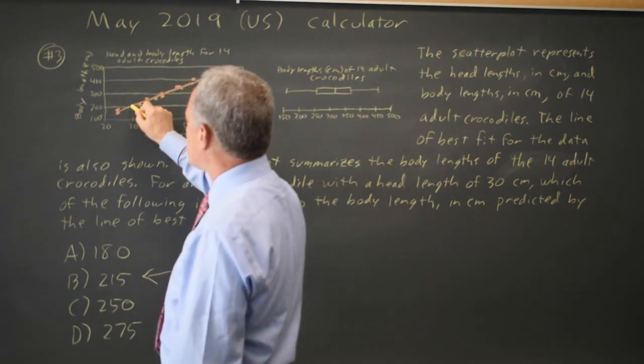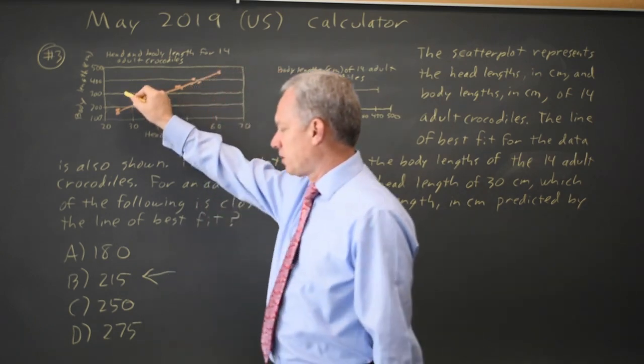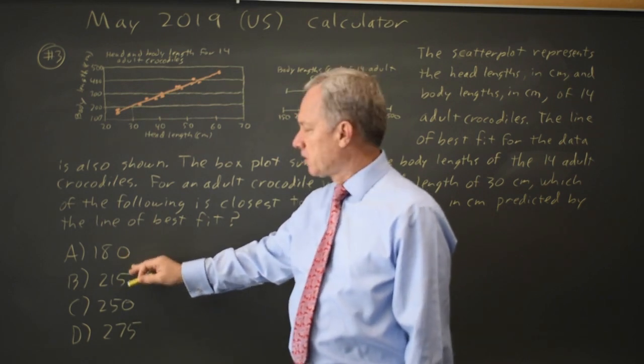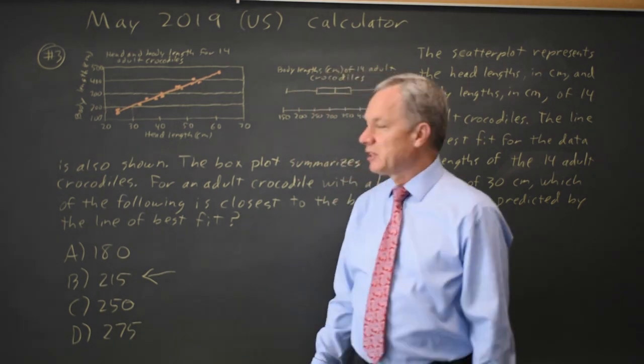We're starting at 100, 200, 300. We're clearly nowhere near 300 or even halfway there, which would be 250. We're clearly above 200, so 180 is wrong. The correct answer would be choice B, 215 centimeters.